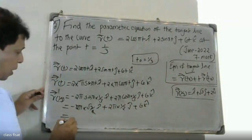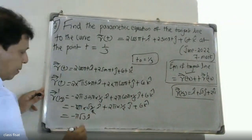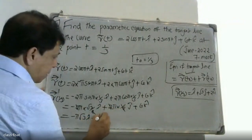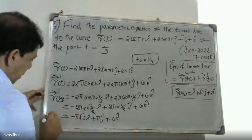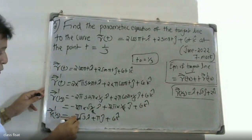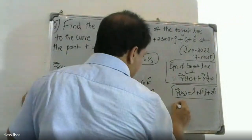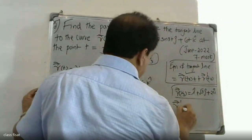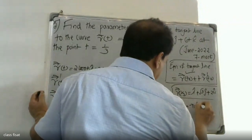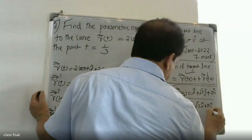So r'(1/3) = -5√3·i + 5j + 6k. And again, r'(1/3) is equal to -5√3·i + 5j + 6k.